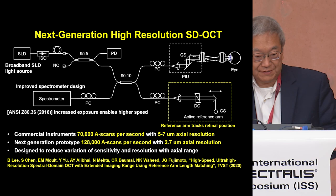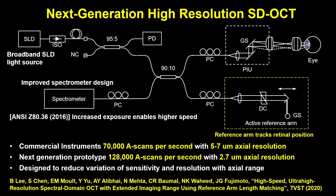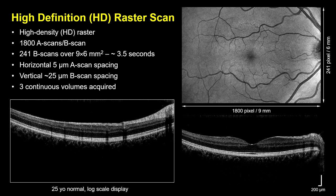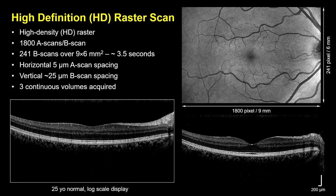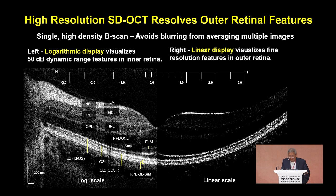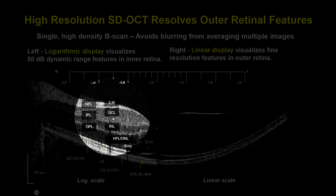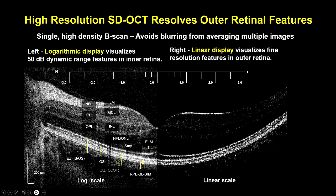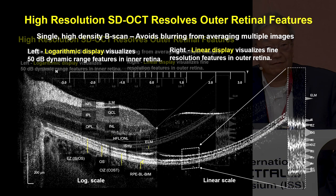This shows an example of a prototype instrument. The specifications are essentially the same as the Heidelberg high-resolution instrument: less than 3 micron axial resolution, 128,000 axial scans per second. With this type of speed and resolution, it's possible to do high-definition scanning covering a 6 by 9 area of the macula. By displaying these images using different scales — the conventional log scale versus a linear scale — the linear scale trades off dynamic range but allows us to see features in the outer retina which would not normally be resolved with standard resolution.